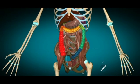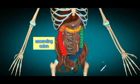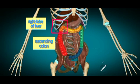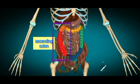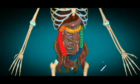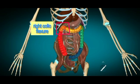Then we've got the ascending colon. The ascending colon ascends upward from the cecum to the inferior surface of the right lobe of the liver, and it occupies the right lower and upper quadrants. On reaching the liver, it bends to the left, forming the right colic flexure.